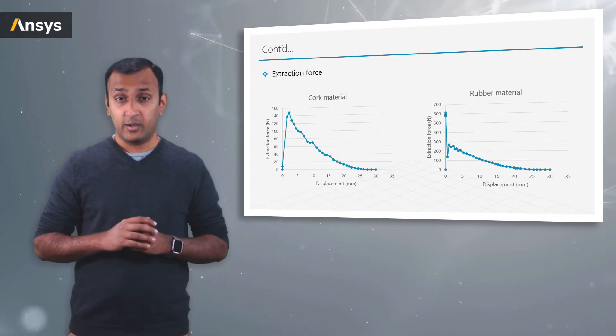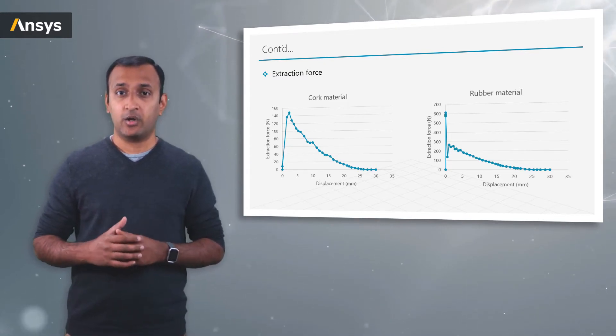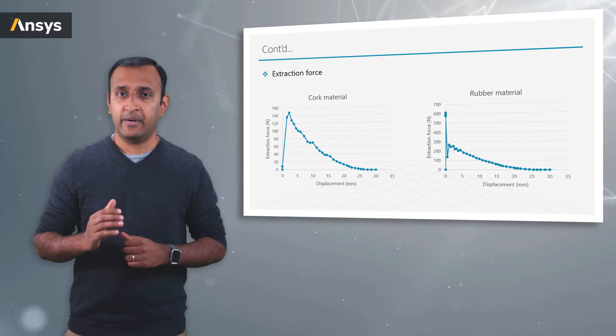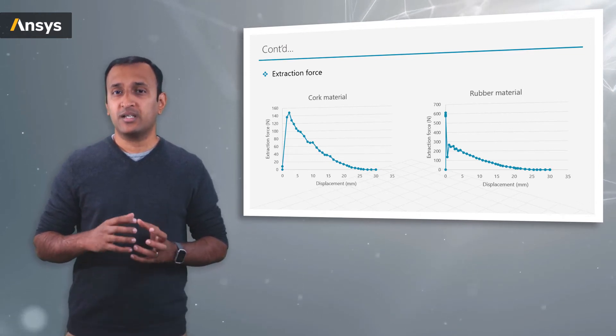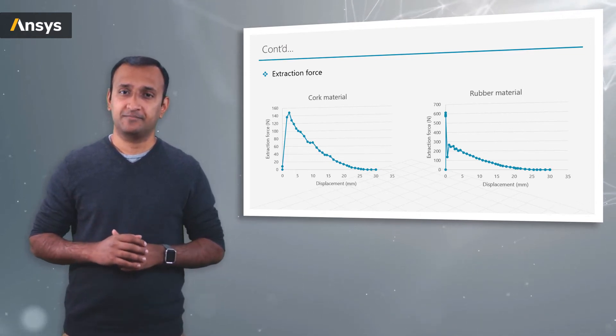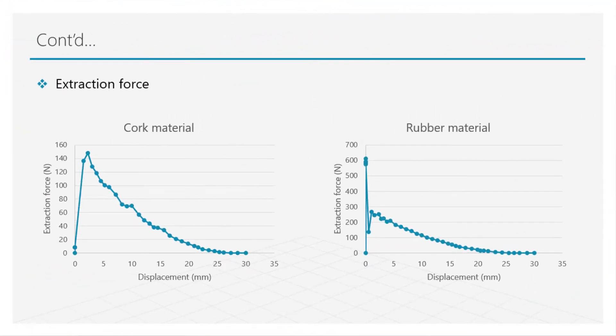In this case, we apply a displacement condition on one end of the cork and measure how much force is required to result in such a displacement. From these plots we can see that the stopper made of cork requires a force of about 160 newtons to be extracted, which falls well within the prescribed limits.